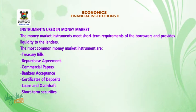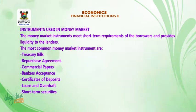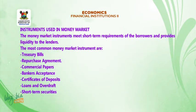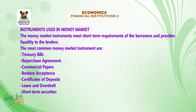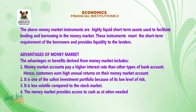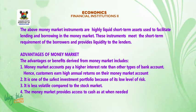Instruments used in money markets: The money market instruments meet short-term requirements of the borrowers and provide liquidity to the lenders. The most common money market instruments are: Treasury bills, Repurchase agreements, Commercial papers, Bankers acceptance, Certificates of Deposits, Loans and Overdrafts, and Short-term Securities.